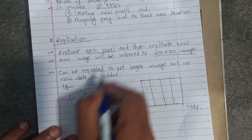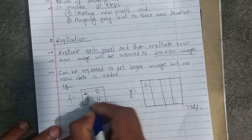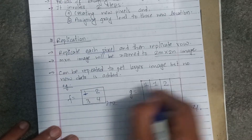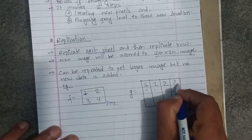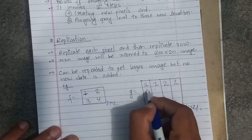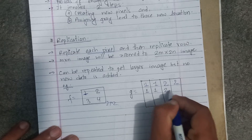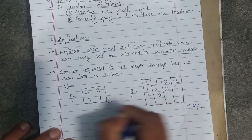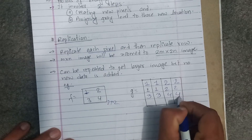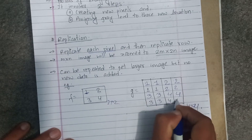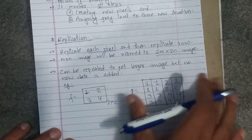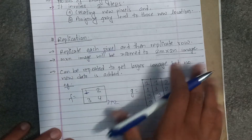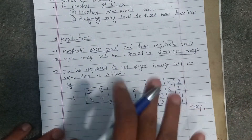This pixel line — what do I replicate? I work on the same pixel line and create a new pixel line. Each pixel is replicated, so one becomes two, two becomes two. This is the new value assigned, and the new pixel is created. This is zooming by replication.